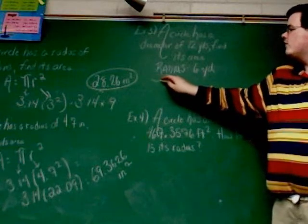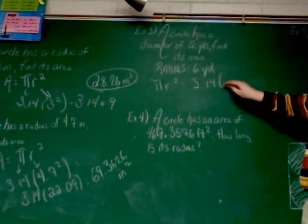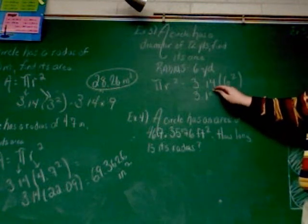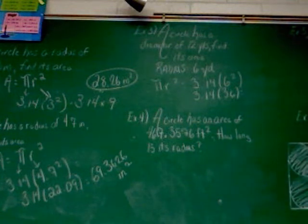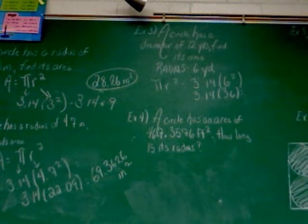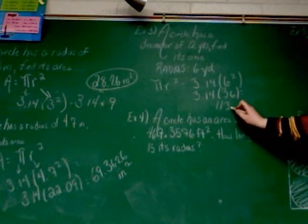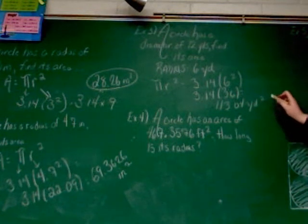So same formula, pi r squared. That's 3.14 times 6 squared. 3.14 times 36. 3.14 times 36 gives me 113.04. That would be yards squared.